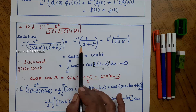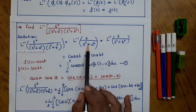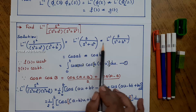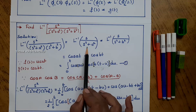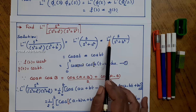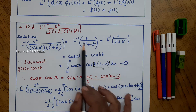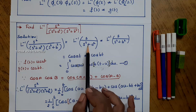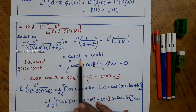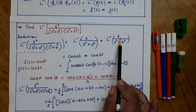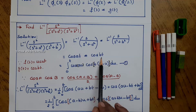Using the convolution, I can write it as a convolution of the product of their respective inverse functions. That is L inverse of s divided by (s squared plus a squared), convolved with L inverse of s divided by (s squared plus b squared). So, L inverse of s divided by (s squared plus a squared) is cos(at), convolved with L inverse of s divided by (s squared plus b squared), which is cos(bt).